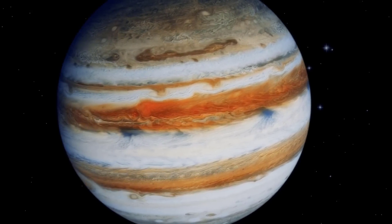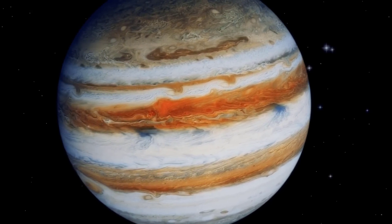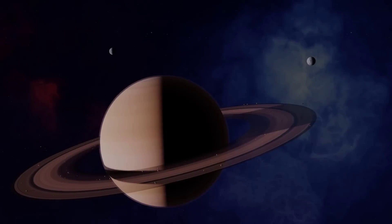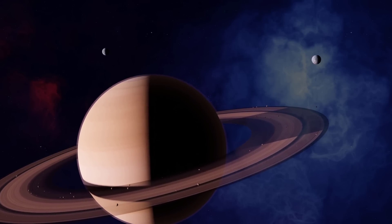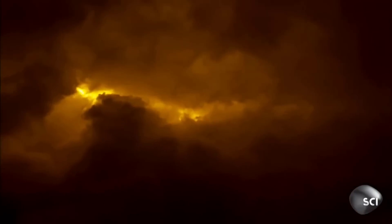Gas giants are often thought of as being inhospitable to life, especially the ones in our solar system. They're situated well outside the habitable Goldilocks zone, and the lack of a solid surface combined with heavy convection currents gives very few opportunities for the precursors of life, let alone life itself, to settle down.